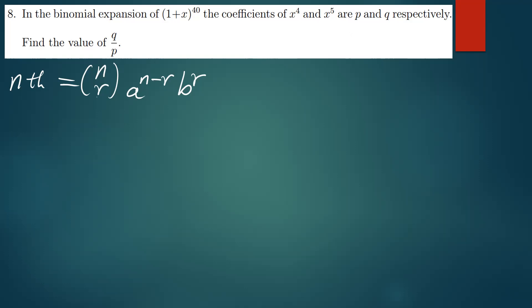We assume that we don't know the value of r at the term which contains x^4. So how do we find the value of r? We solve it the same way as finding the term independent of x. Let us first find the value of r at x^4. We have the value of n, a and b, but we don't have r, so let's find that.